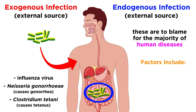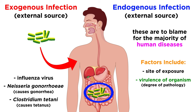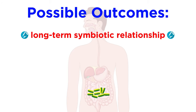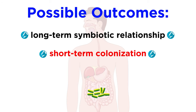Factors to consider are as follows: there is the site of exposure, there is the virulence — or the degree of pathology — of the organism, and there is the host's ability to respond to the organism. All of these determine whether the complex interaction between a human host and a microorganism will result in a long-term symbiotic relationship, a short-term colonization, or disease.